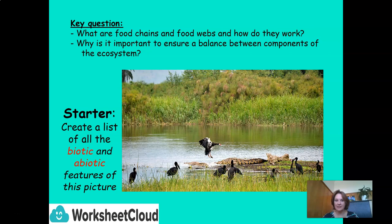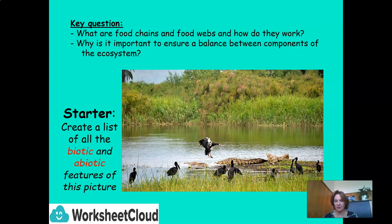First, a little bit of revision from yesterday. I want you to look at the picture and create a list of all the biotic and abiotic features. The biotic factors are the living organisms in this picture — the birds, the crocodile in the background, the plants growing in the background. The abiotic factors are the non-living features: things like the water, the soil, the temperature, and the amount of sunlight coming into the ecosystem.